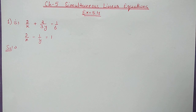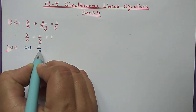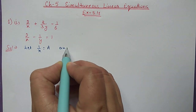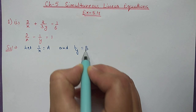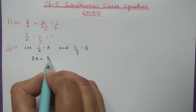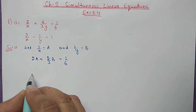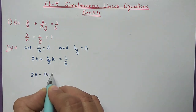So the first question is: 2/x plus 2/3y equal to 1/6, and 2/x minus 1/y equal to 1. You can see here variables are in the denominator, so these are not linear equations. We will change these equations into linear equations by letting 1/x equal to a and 1/y equal to b. The first equation will change to 2a plus 2/3b equal to 1/6, and the second equation becomes 2a minus b equal to 1.